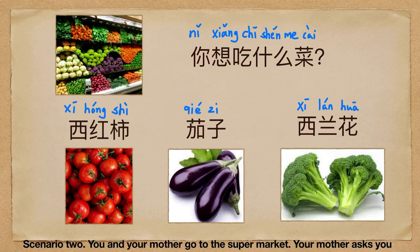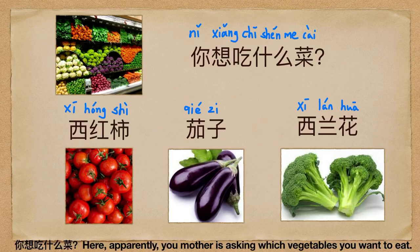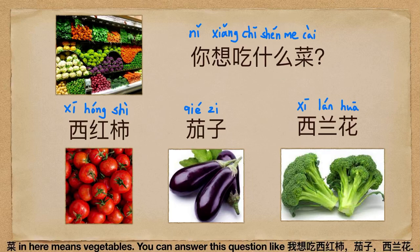Scenario 2: You and your mother go to the supermarket. Your mother asks you, 你想吃什么菜? Here, apparently, your mother is asking which vegetable you want to eat. 菜 in here means vegetables. You can answer this question like, 我想吃西红柿,茄子,西兰花.